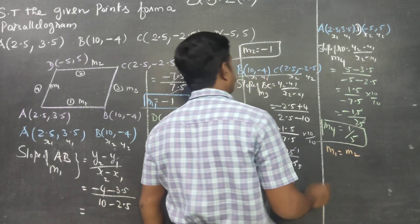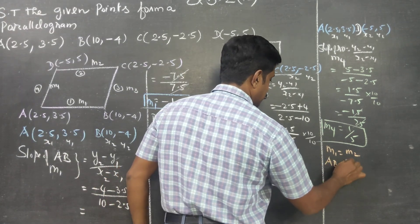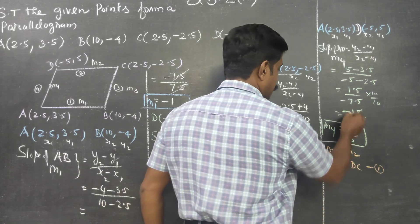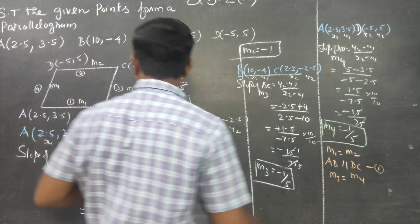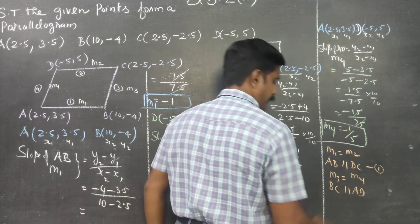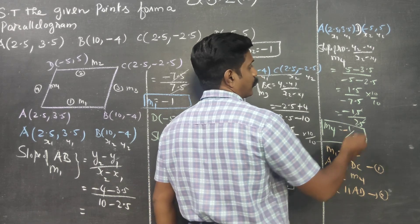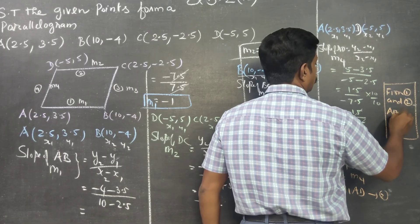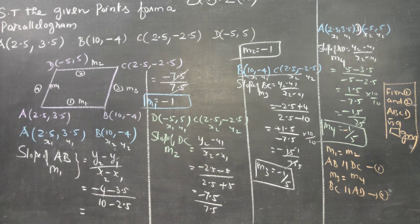M1 and M2 are equal. M1 is equal to M2, that is AB is parallel to DC — this is result number 1. M3 and M4 are equal, M3 is equal to M4, BC is parallel to AD — this is number 2. Opposite pairs are parallel. From 1 and 2, ABCD is a parallelogram.